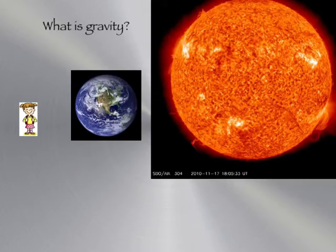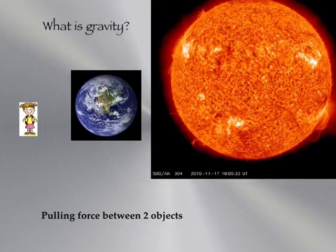So what is gravity? Gravity is the pulling force between two objects. So for example, if I have this little girl in the earth, gravity is pulling the little girl towards earth. And actually, the little girl is pulling on the earth, but just with a much smaller force, because she is a smaller object.